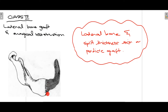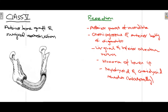Class 4 is the case when lateral bone graft and surgical reconstruction of the mandible is performed. Roughly to the midline, the entire structure of the mandible is removed, but a lateral bone graft has been placed and there is surgical reconstruction. A lateral bone and split-thickness or pedicle graft are used when performing this reconstruction.